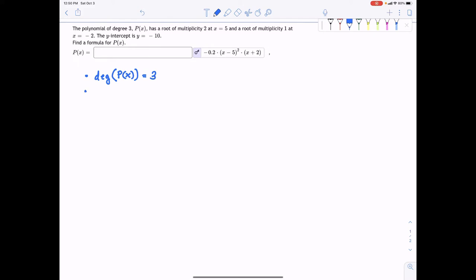The second thing they said is that x equals 5 is a root with multiplicity of 2. The next root they give us, negative 2, and this is with multiplicity 1.